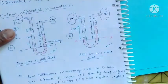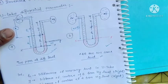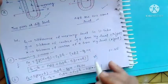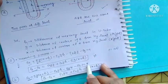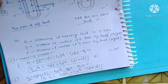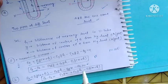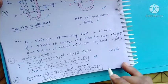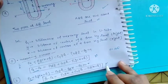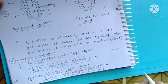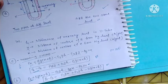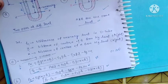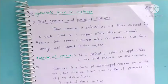PA minus PB = 0 तक रखने पर जो formula आता है उसको हम numericals में use करते हैं। आगे हम इसके numericals भी देखेंगे। अब चलते हैं next topic की तरफ जो है hydrostatic force on surfaces।